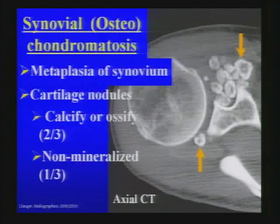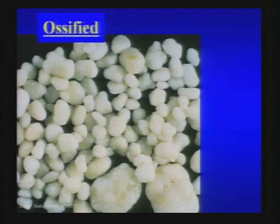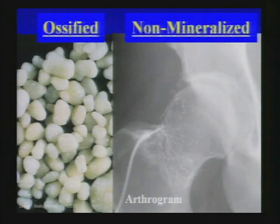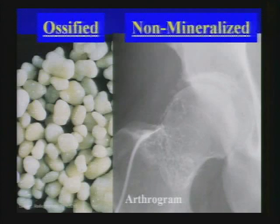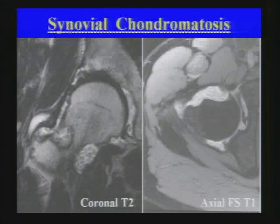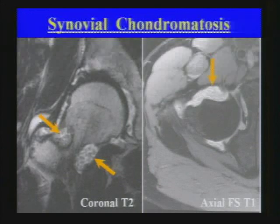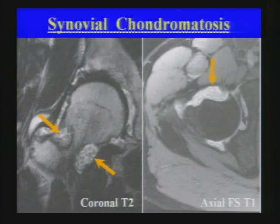About a third of the time the nodules are non-mineralized and not easily visible on conventional radiography. An arthrogram can reveal filling defects in the contrast column. On MRI, non-mineralized cartilage nodules are visible within the joint, along with the classic eccentric erosion of the femoral neck and head — synovial chondromatosis.